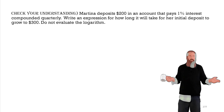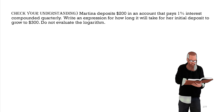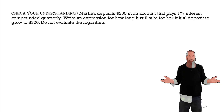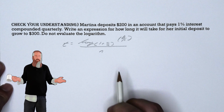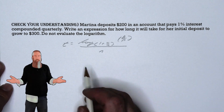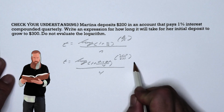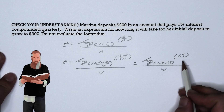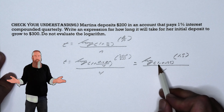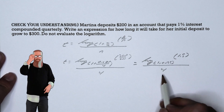Let's check our understanding. Martina deposits $200 into an account that pays 1% interest compounded quarterly. Write an expression for how long it will take for her initial deposit to grow to $300, but don't evaluate the logarithm. Using the t formula from our last example, we substitute all values into the equation and simplify to get log base 1.0025 of 1.5, all divided by 4.